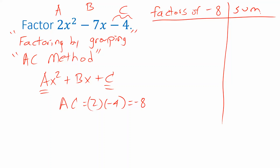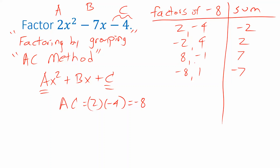Going through factors of negative 8: positive 2 and negative 4 sum to negative 2; negative 2 and positive 4 sum to positive 2; positive 8 and negative 1 sum to positive 7; negative 8 and positive 1 sum to negative 7 — that last one is what I'm looking for. I want factors of AC whose sum equals b. That's the AC method.